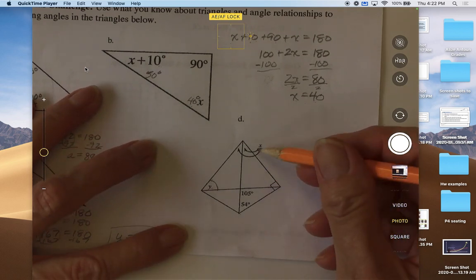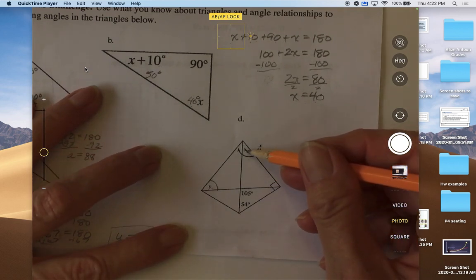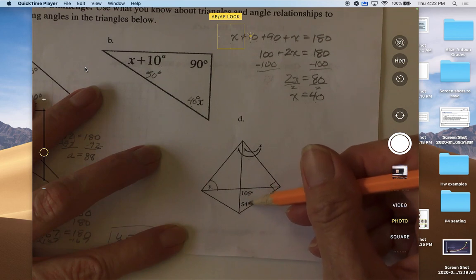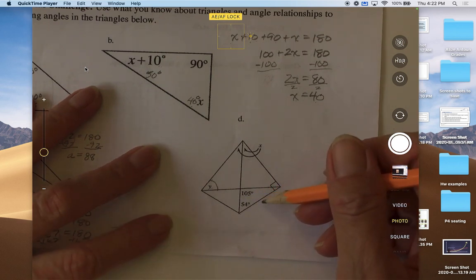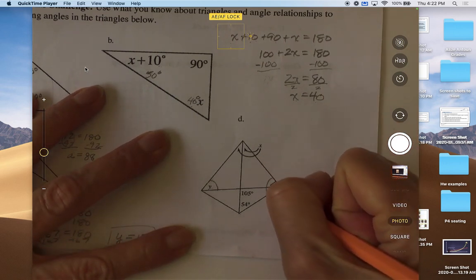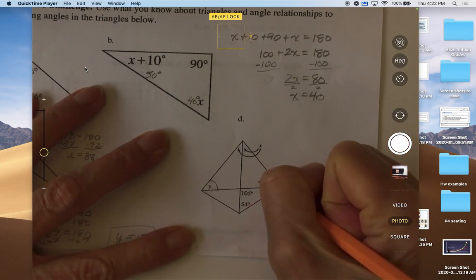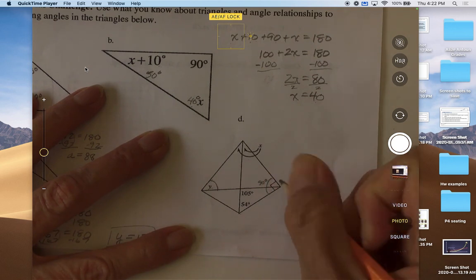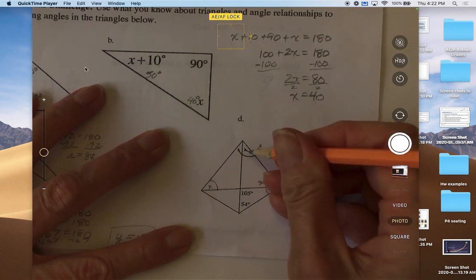If we look at x, we've got information here. We know what this angle is, and we know this angle right here is 90 degrees because it's a right angle.